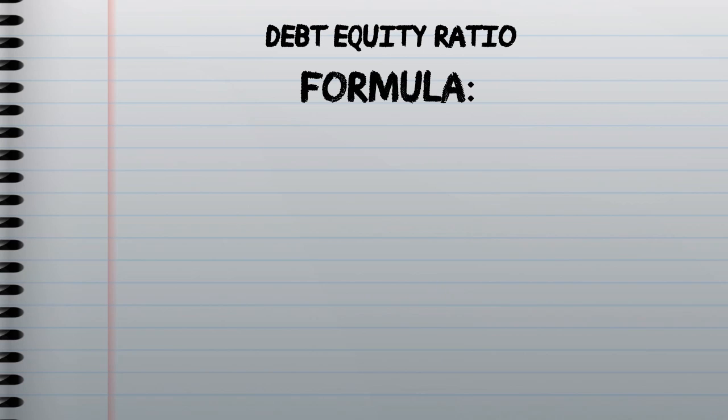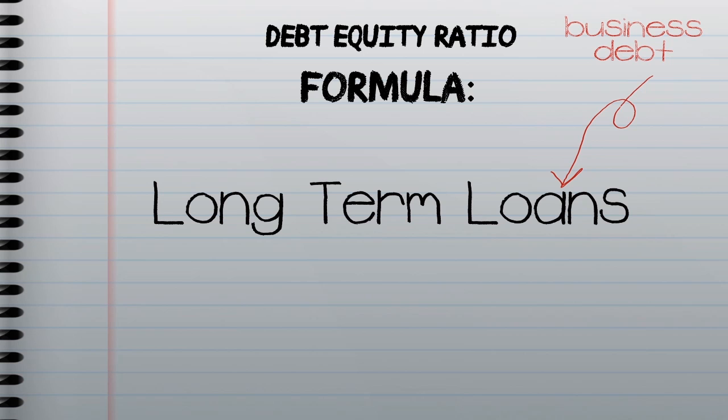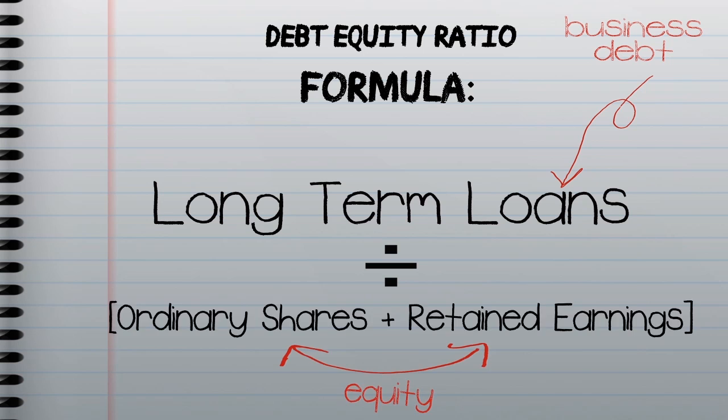The formula for debt equity ratio is as follows. It's the business's debt — which is explained as long-term loans — divided by the equity, which is the ordinary shares and the retained earnings.